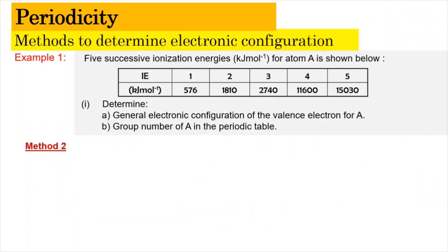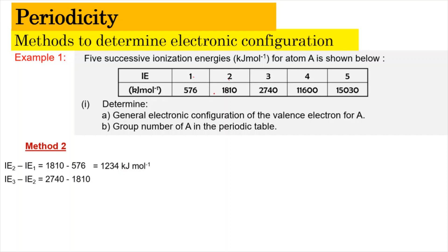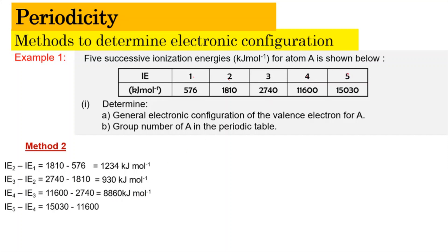Using Method 2 (energy differences) on the same example: IE2 − IE1 = 1810 − 576 = 1234 kJ/mol; IE3 − IE2 = 2740 − 1810 = 930 kJ/mol; IE4 − IE3 = 11600 − 2740 = 8860 kJ/mol; IE5 − IE4 = 3430 kJ/mol. The largest difference is IE4 − IE3 at 8860 kJ/mol, confirming the same conclusion.